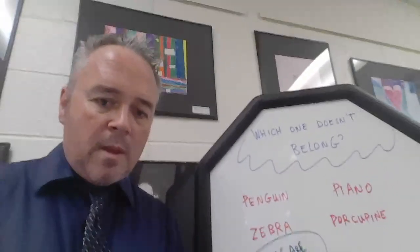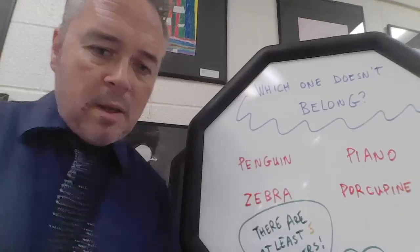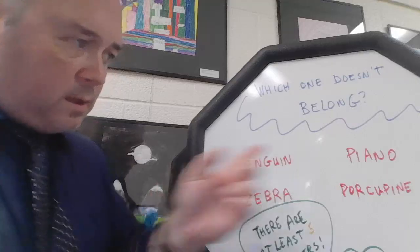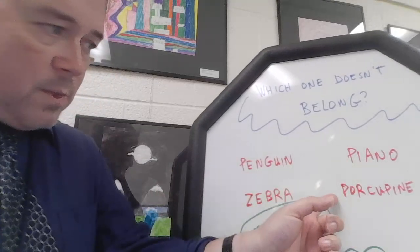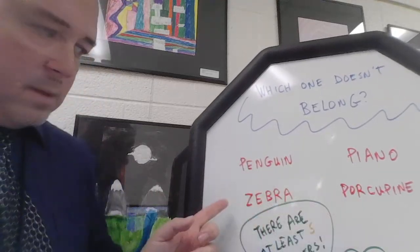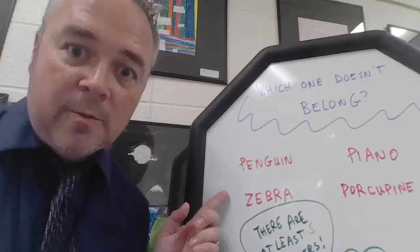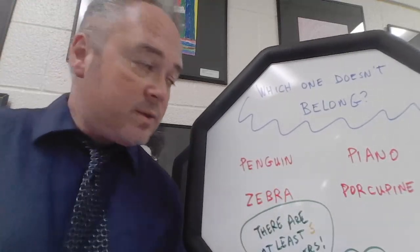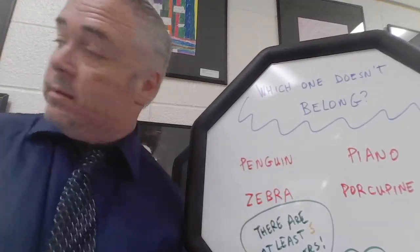When you play Which One Doesn't Belong, there are three strategies for figuring out which one doesn't belong. One strategy is to think about the way the words are spelled — look at the letters inside the words. So looking at this list: penguin starts with a P, piano starts with a P, porcupine starts with a P, but zebra does not belong because it doesn't start with P. The others all start with P.